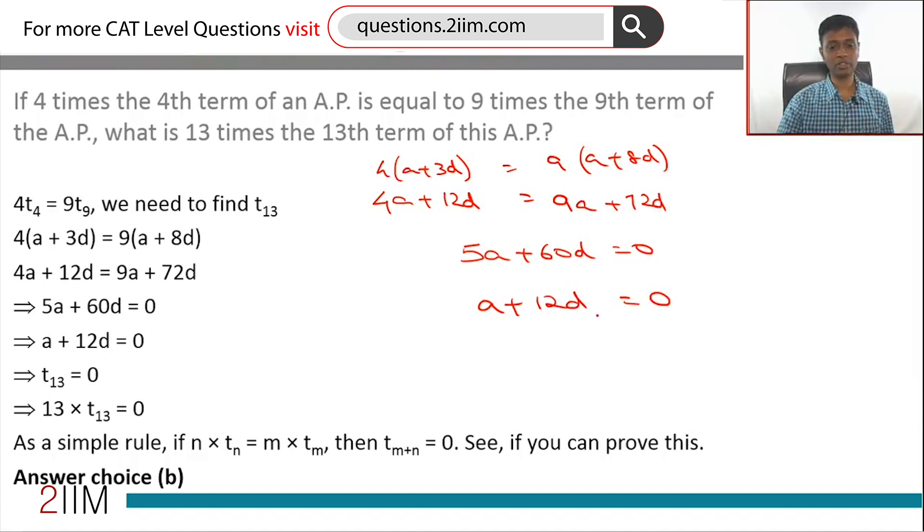A plus 12D is 0, this is nothing but the 13th term. The 13th term is 0, so 13 times T13 should also be 0.